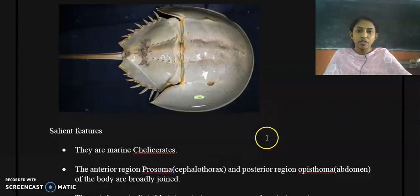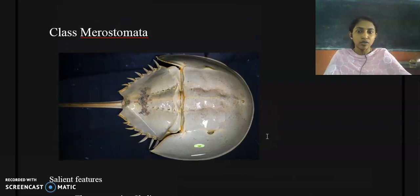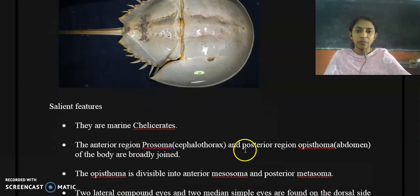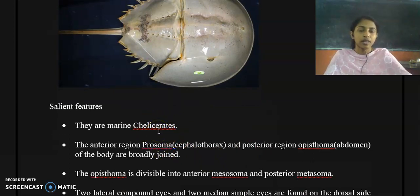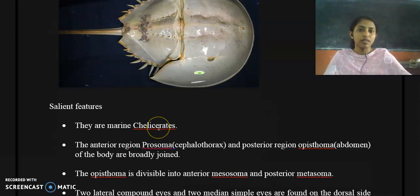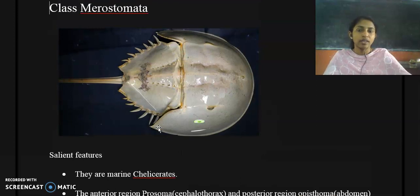The features of Class Merostomata include that they are marine chelicerates. They are called chelicerates because they come under subphylum Chelicerata and also because they possess chelicerae, which is an appendage. The chelicerae are seen in Limulus and are common in the members of Class Merostomata.